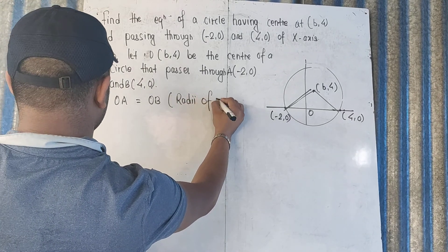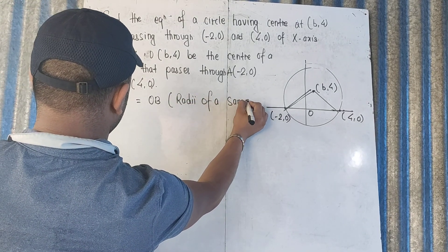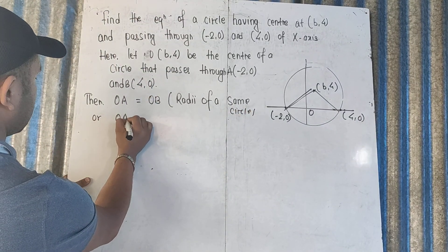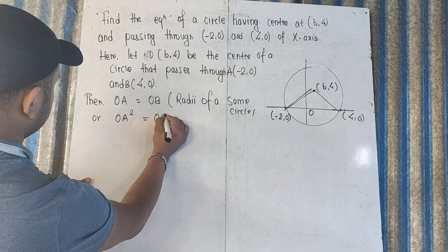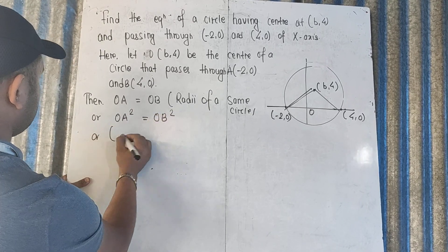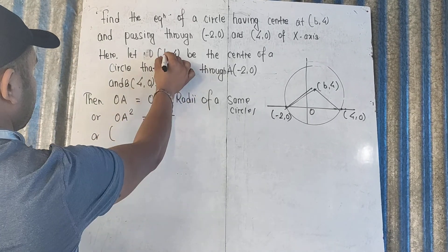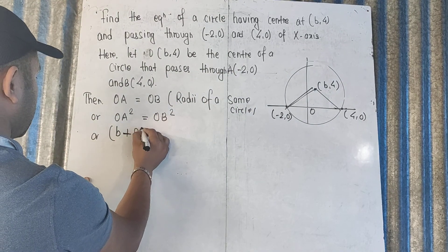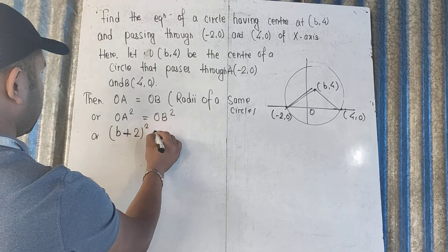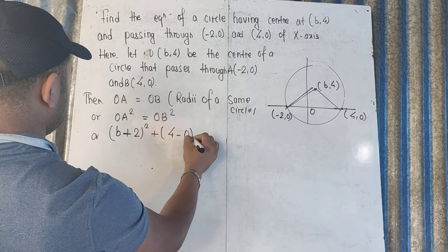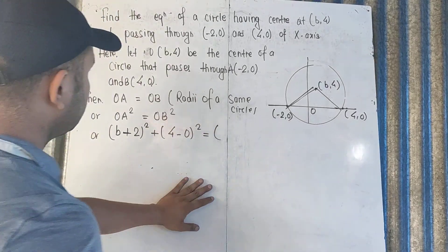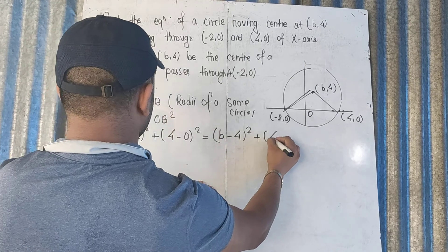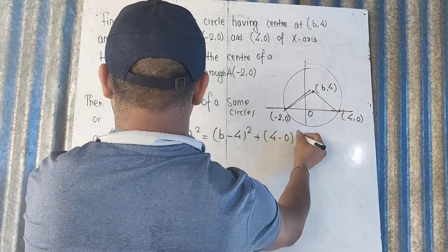So the radius of a circle — how are we the square? OA² equals OB². This comes from: (b minus (-2))² plus (0)² equals (b minus 4)² plus (0)². So: (-2, 0): (b+2)² plus 0² equals OB. We take (b minus 4)² plus (0)².